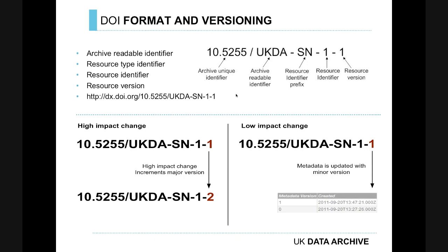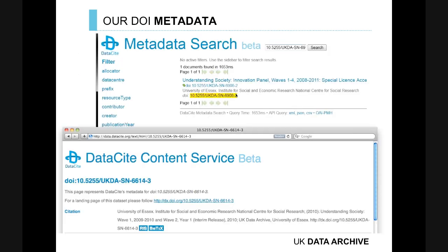Here's our DOI format. We have our organisation identifier, 10.5255; our readable identifier, UKDA; SN for study number (e.g. SN1234); and the resource version, which increments with every high-impact change. A high-impact change simply increments the version from one to two. With a low-impact change, we don't change the version externally, but we keep internal track of minor versions. There's a standard way of citing with DataCite using five fields, but version isn't displayed — we're adding that field to the metadata we send, since version is very important for our data.